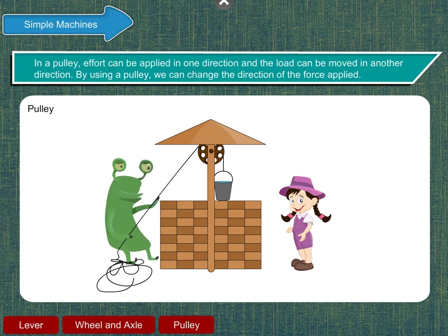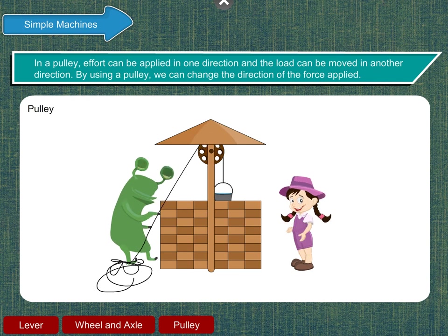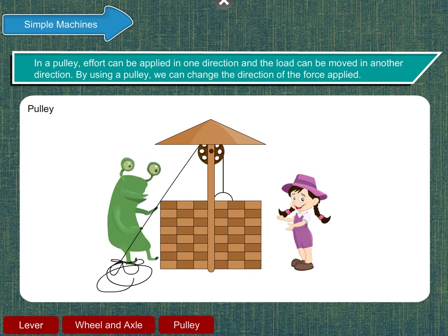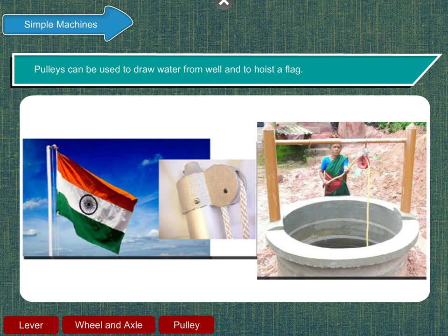In a pulley, effort can be applied in one direction and the load can be moved in another direction. By using a pulley, we can change the direction of the force applied. Pulleys can be used to draw water from well and to hoist a flag.